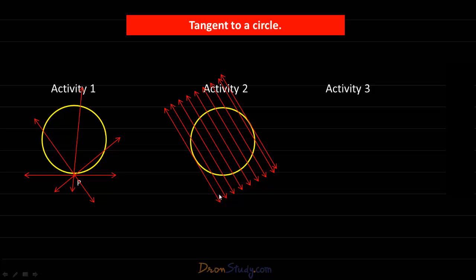From Activity 2 we establish two facts. First, a tangent is a secant when both the endpoints of the corresponding chord coincide. Second, a circle cannot have more than two tangents parallel to a given secant. To a given secant we can draw only two parallel tangents and not more.